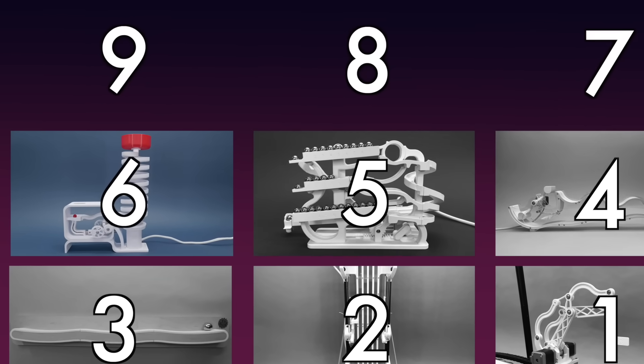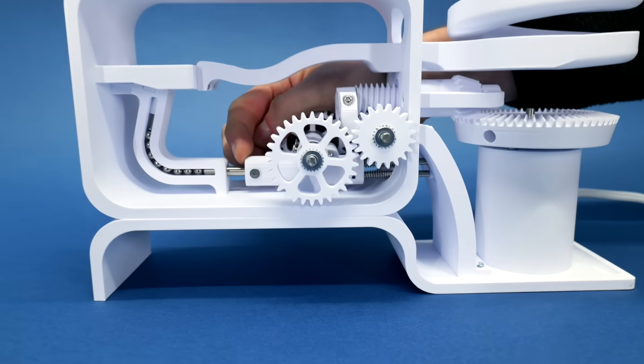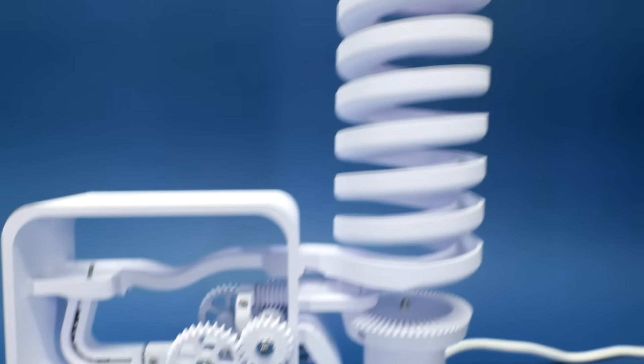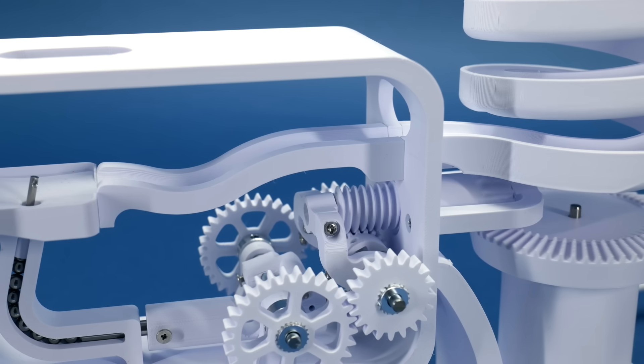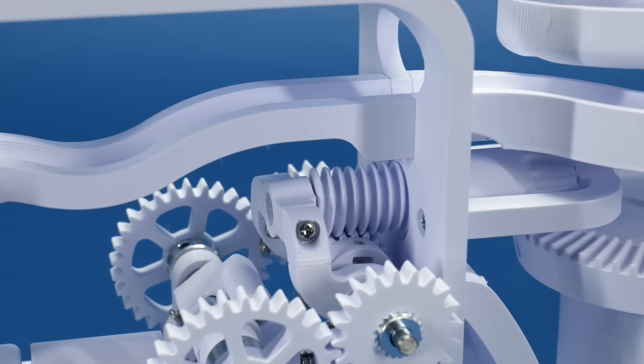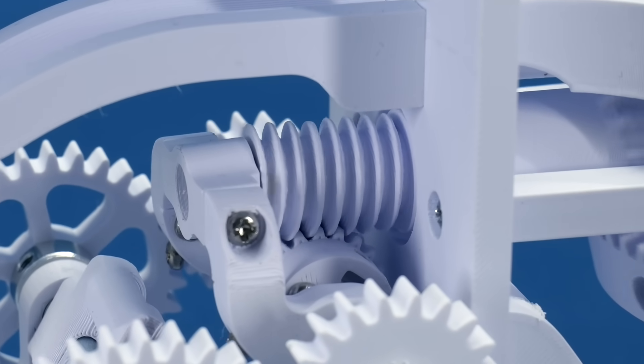Keeping on the theme of catching and launching balls, contraption number six uses the force of springs to launch a ball to the top of this spiral. The motor is connected through this bevel gear to this worm gear.